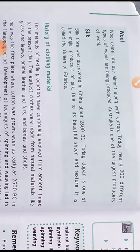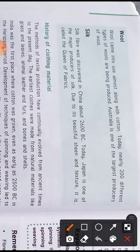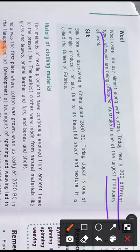Wool came into use almost along with cotton. Today, nearly 200 different types of wools are being produced. Australia is one of the largest producers of wool.